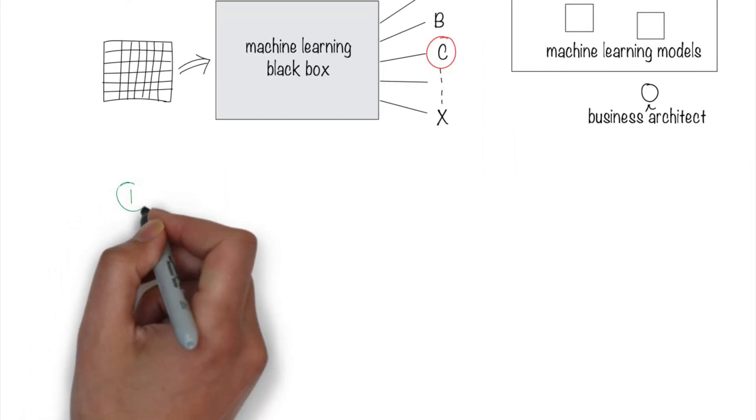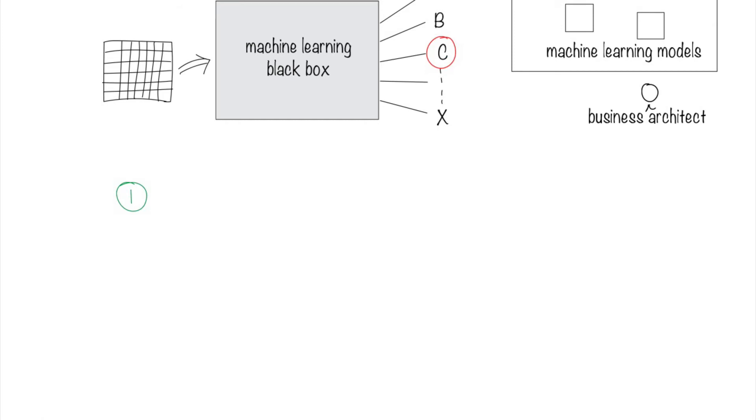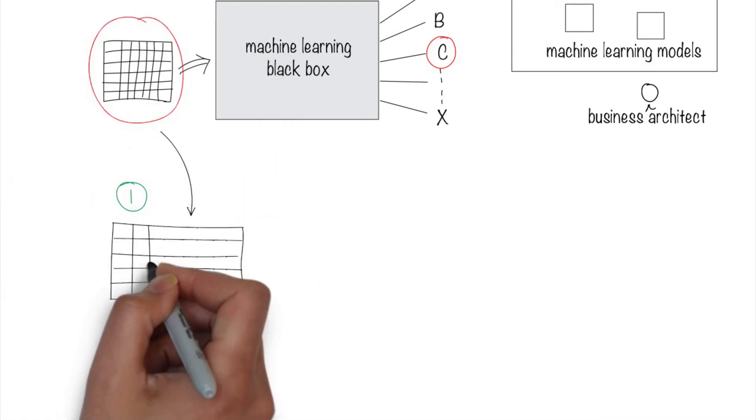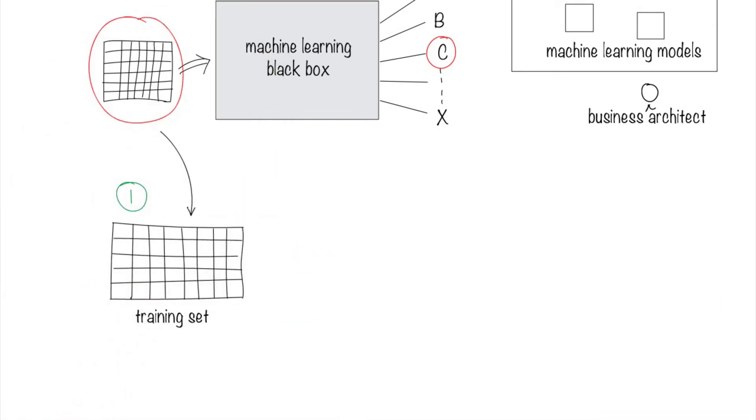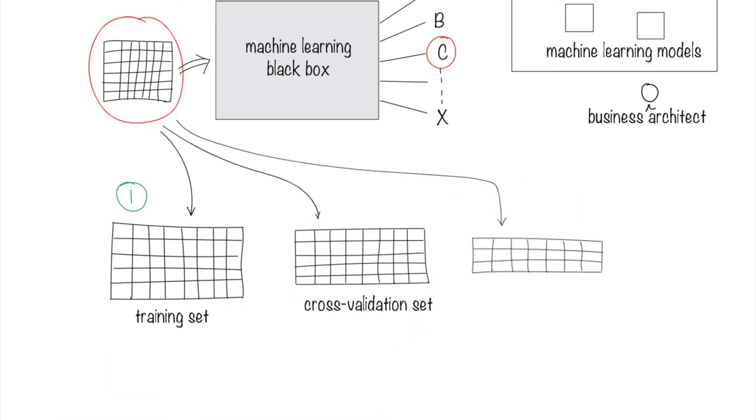Here's what it does internally. Step 1. Break the data into smaller pieces that can be used for training, cross-validation, and testing.